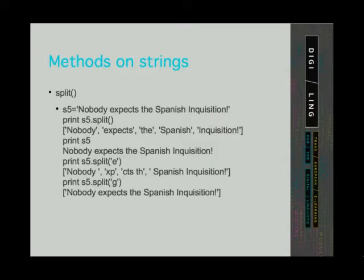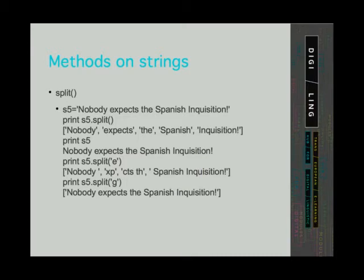Let's say we have a string 'Nobody expects the Spanish Inquisition'. When we call the method split without defining a delimiter, the program uses white space and returns a list of 5 elements. We can also define the delimiter — for example, a lowercase letter e — and the program will return a list with different elements. If we define a character not found in our string as the delimiter, the program will return a list with one element containing the whole string.